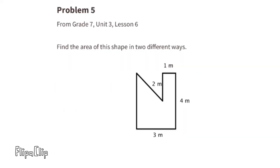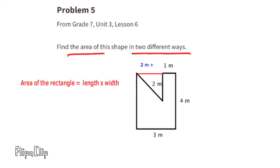Problem number five, from seventh grade Unit 3, Lesson 6: find the area of this shape in two different ways. First, let's make it into a rectangle, because the area of a rectangle is length times width. Three meters times four meters equals 12 meters squared, so the rectangle has an area of 12 meters squared.